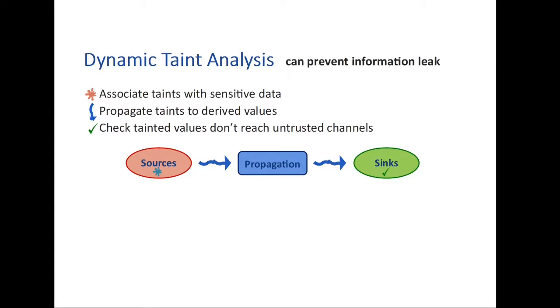Here you can see how Dynamic Taint analyzes works. It comprises three main components, namely sources, propagation, and sinks.